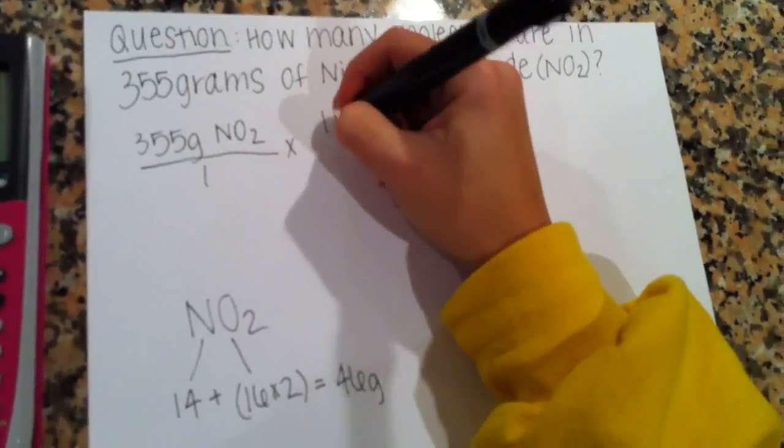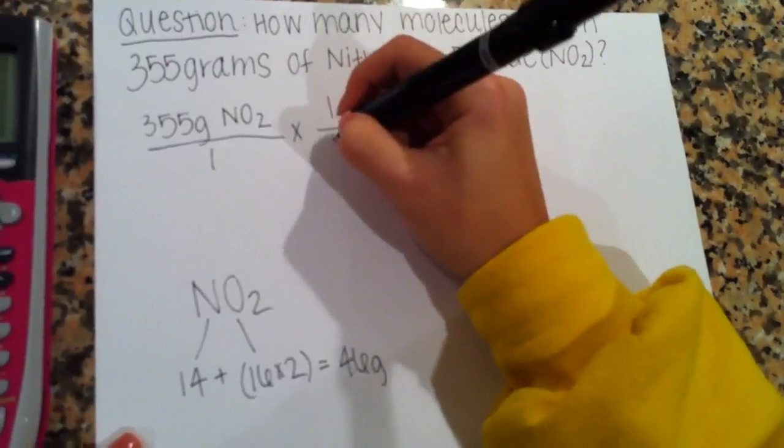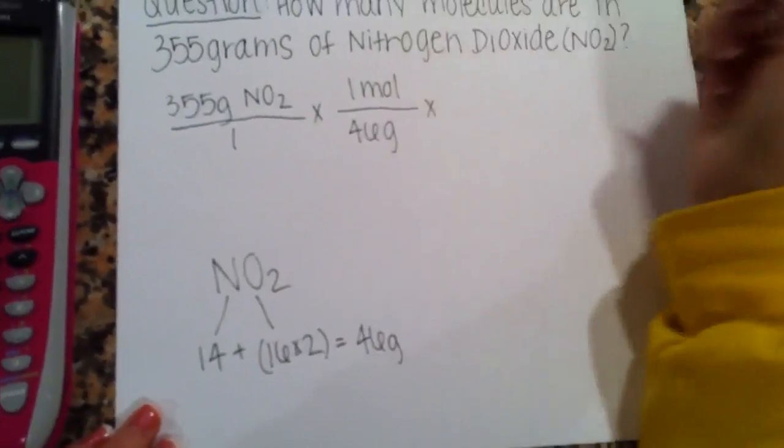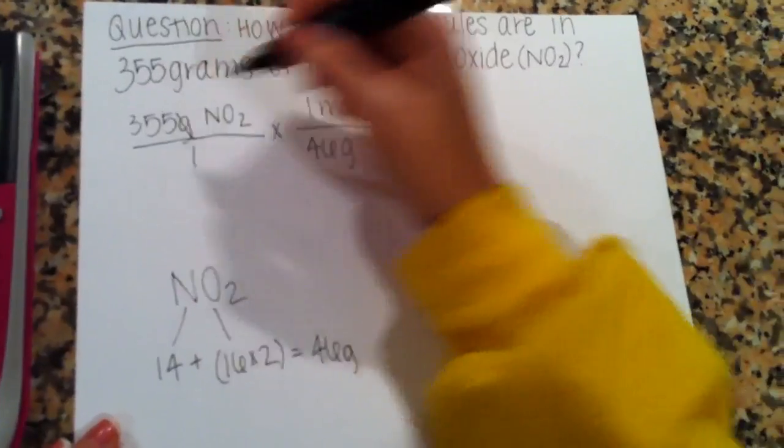So we know that 1 mole is 46 grams. So now our grams cancel out.